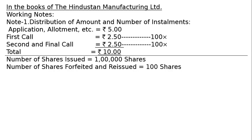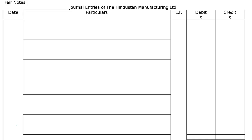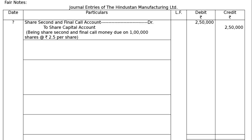The 100 shares were forfeited and reissued - no partial reissue. Journal entries of Hindustan Manufacturing Limited: First entry, starting from the second and final call. Share Second and Final Call Account debited to Share Capital Account, being share second and final call money due on 1 lakh shares at Rs.2.50 per share - that is 1 lakh × 2.5 = Rs.2,50,000 (debit and credit).